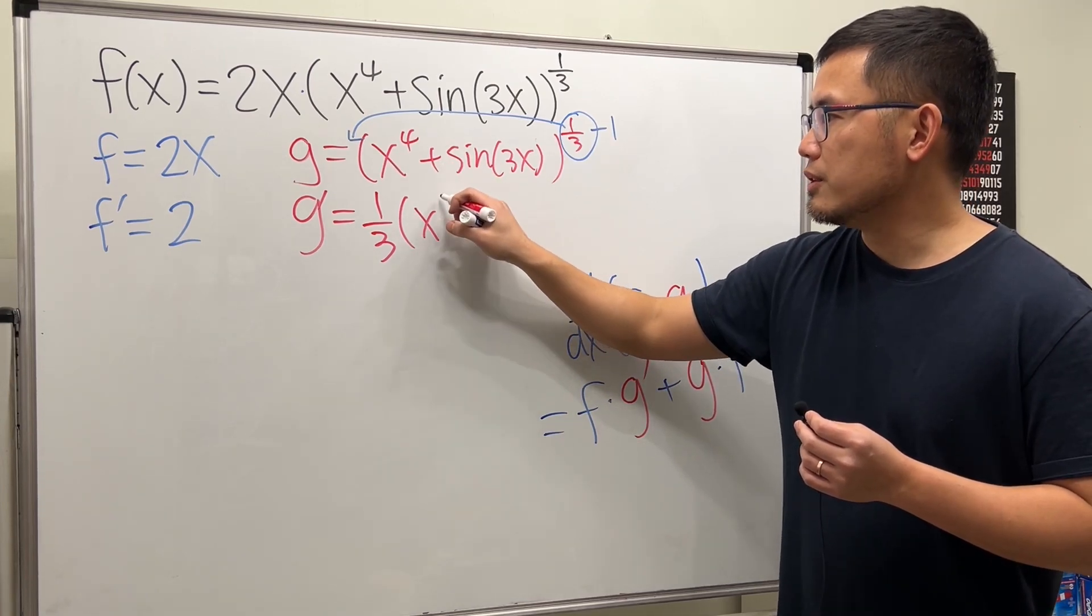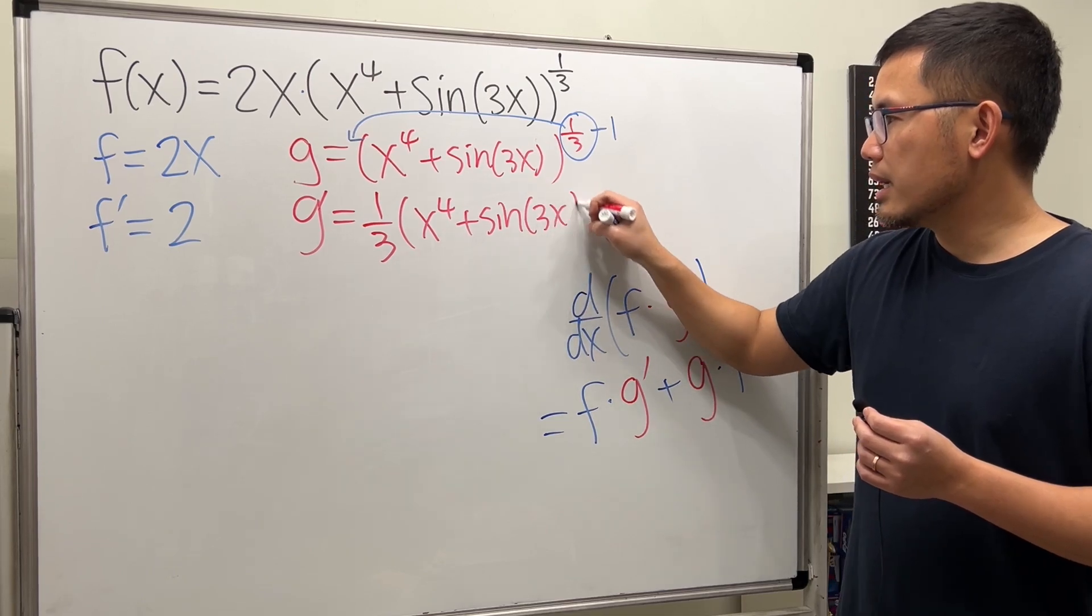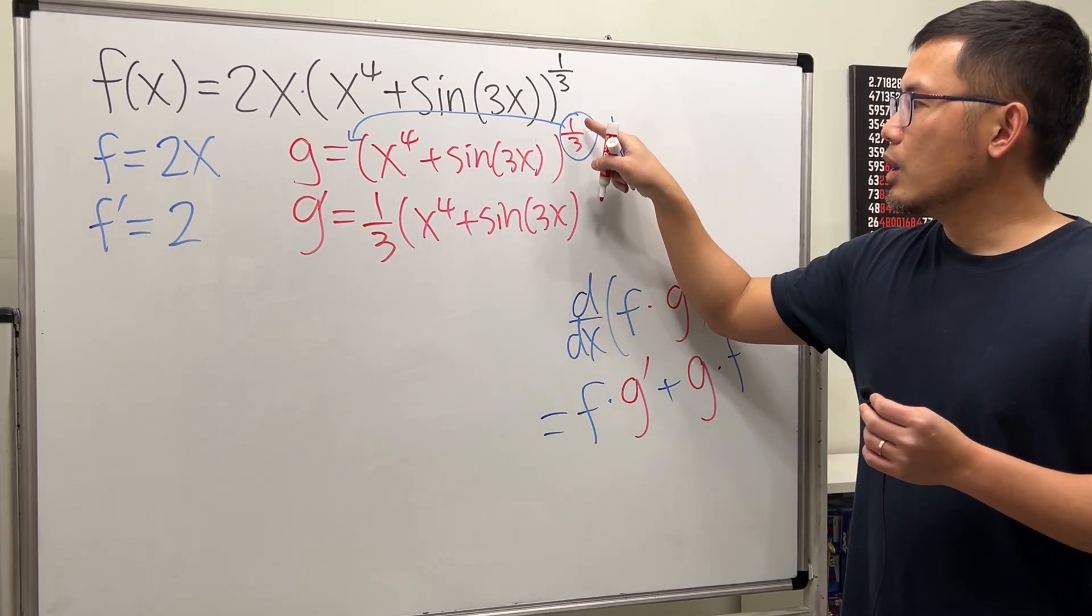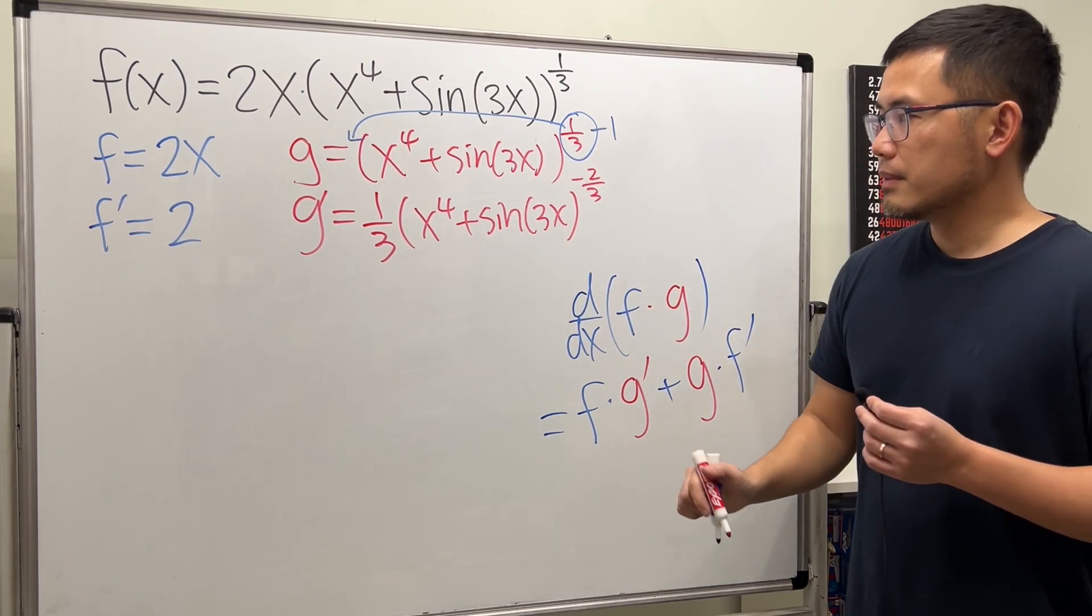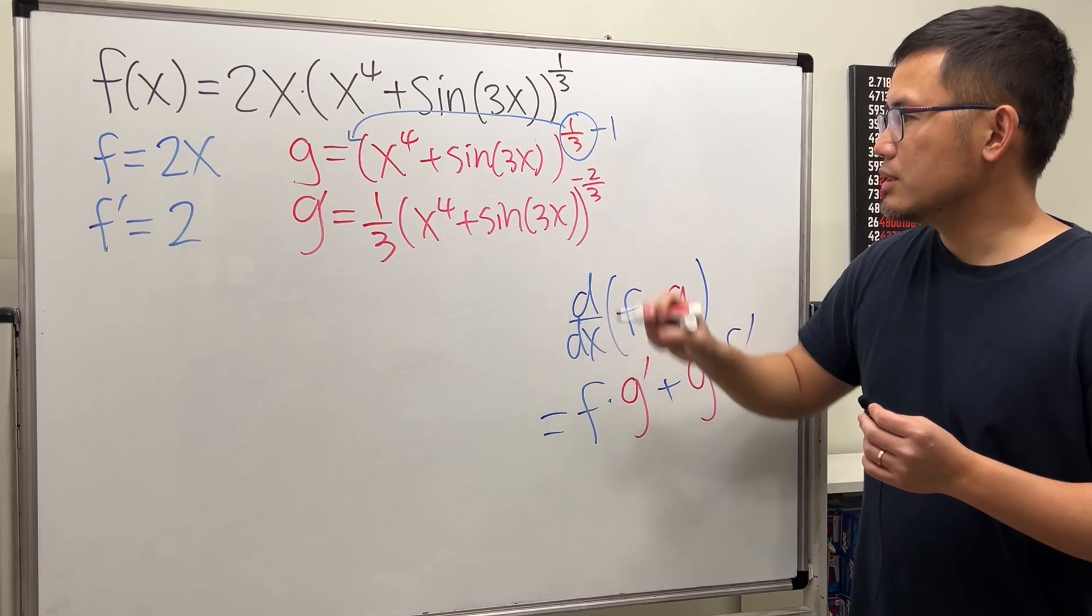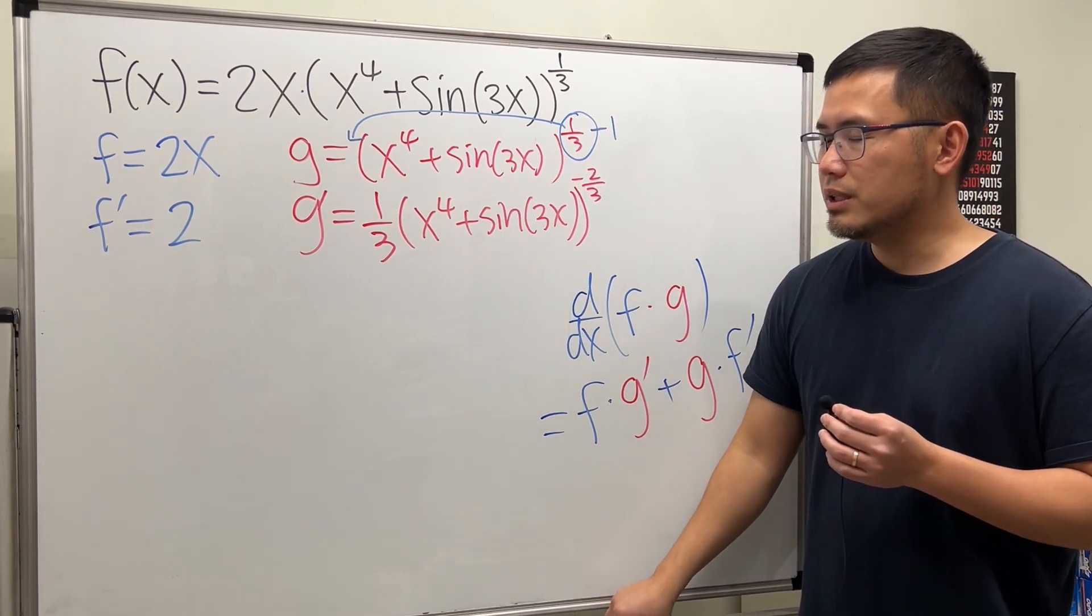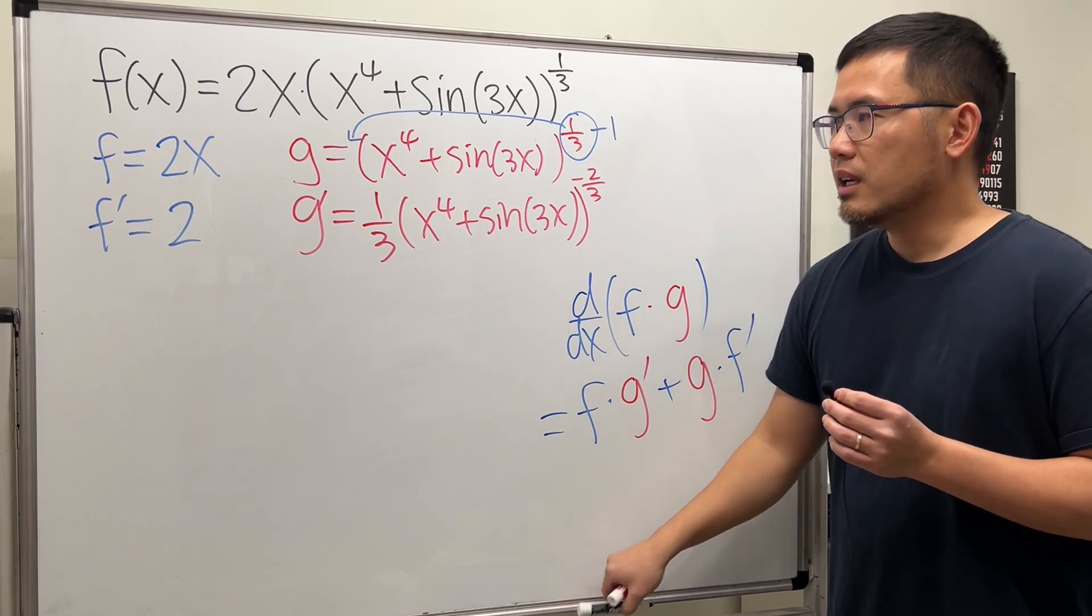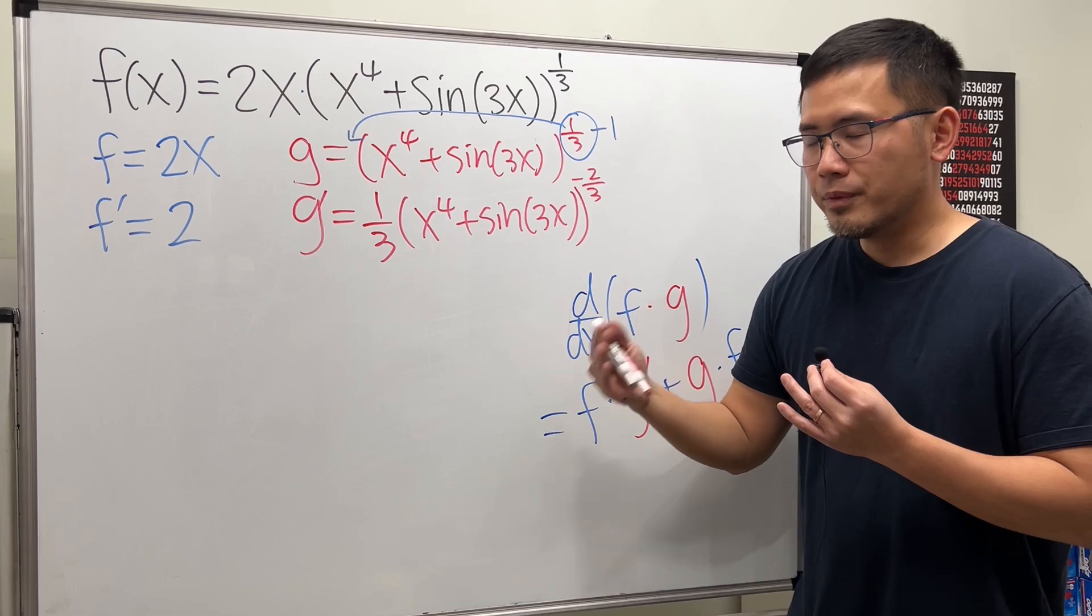So we will have x to the fourth power plus sine of 3x. And then one third minus 1, we get negative two thirds. And I need that parentheses right here. But this is not it yet because we still need the chain rule. So, as you can see, if you are just focusing on this part, it's easier to follow along.